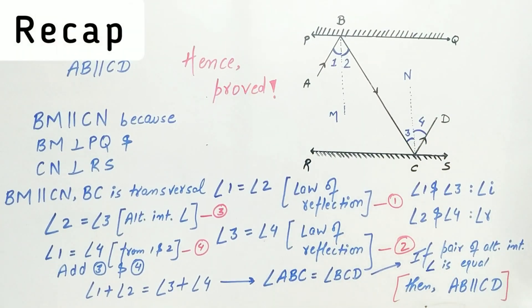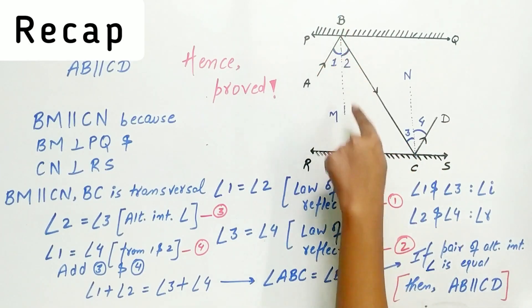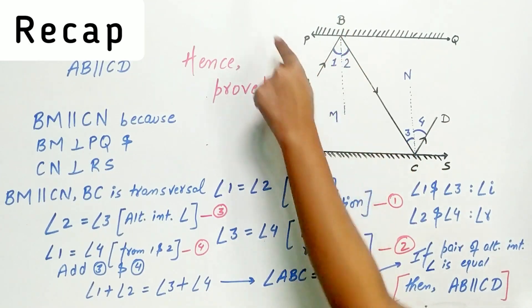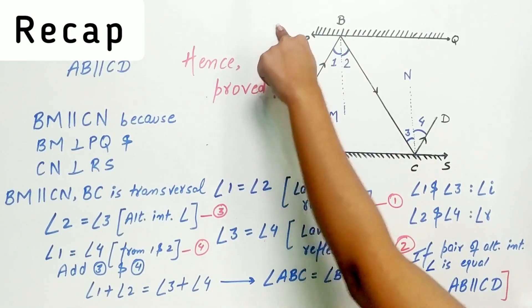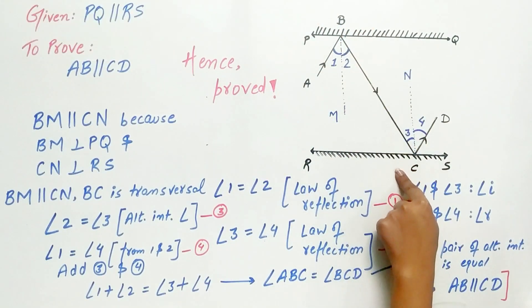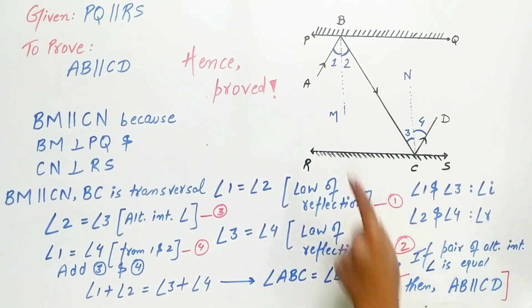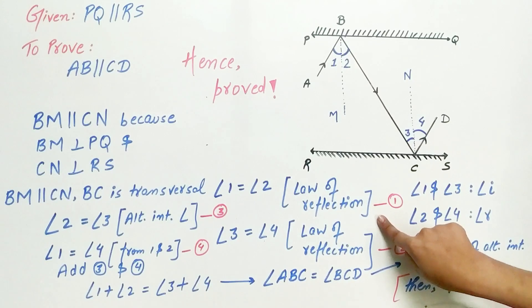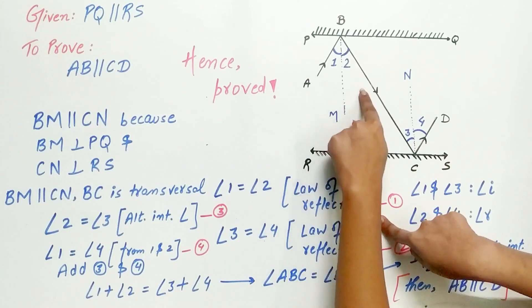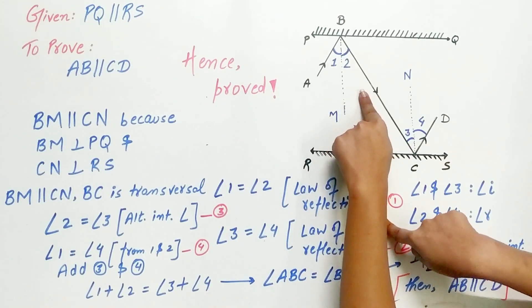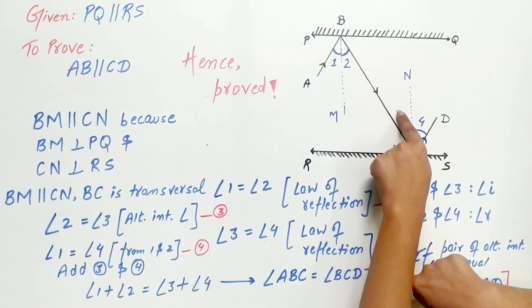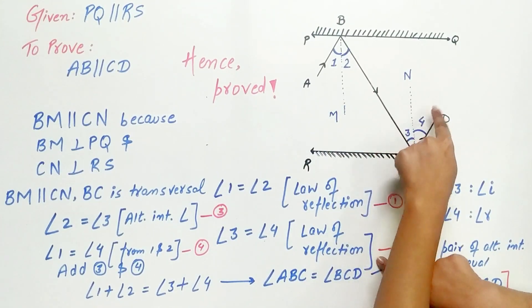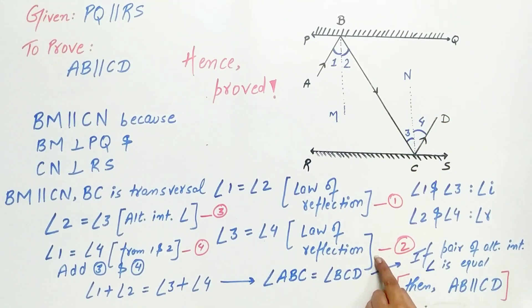A quick recap: first step is to draw a line perpendicular to PQ and a line perpendicular to RS. Angle 1 is equal to angle 2 because the angle of incidence equals the angle of reflection. Similarly, angle 3 is equal to angle 4 because of the law of reflection.